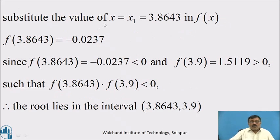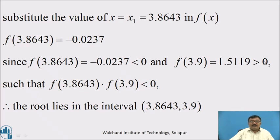Substituting x = x₁ = 3.8643 in f(x), we get f(3.8643) = −0.0237, which is less than 0, and f(3.9) = 1.519, which is greater than 0. Since f(3.8643)·f(3.9) < 0, the root lies in the interval (3.8643, 3.9).